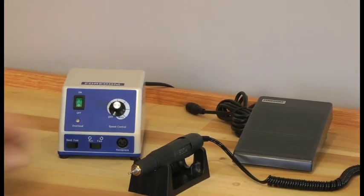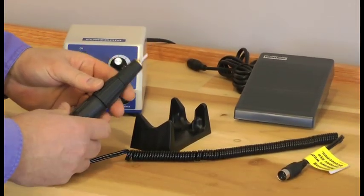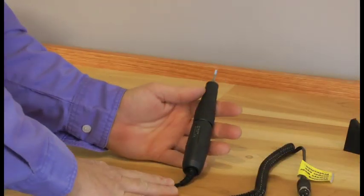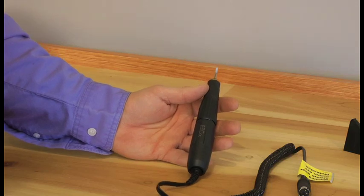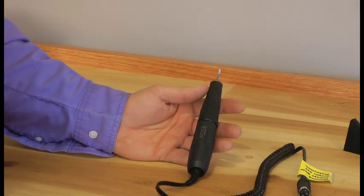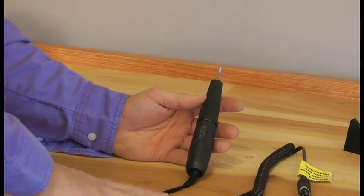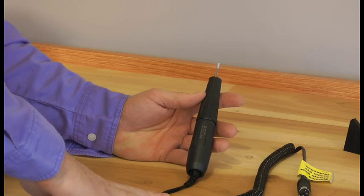Foot pedal is pretty standard, variable speed. This is our high-speed rotary hand piece that goes with the K.1070 kit. It goes from 1,000 to 38,000 RPM in forward or reverse.